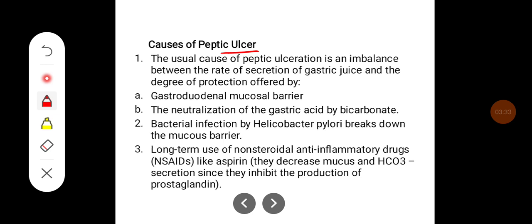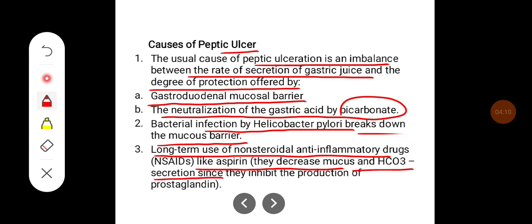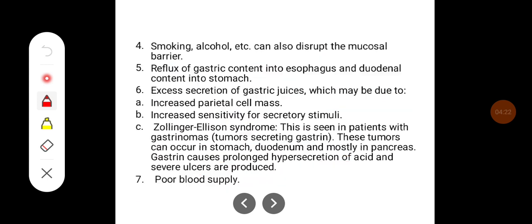Causes of Peptic Ulcer: The usual cause of peptic ulceration is an imbalance between the rate of secretion of gastric juice and the degree of protection offered by the gastroduodenal mucosal barrier and the neutralization of gastric acid by bicarbonates. Bacterial infection such as Helicobacter pylori breaks down the mucosal barrier. Long-term use of non-steroidal anti-inflammatory drugs (NSAIDs) like aspirin decreases mucus and bicarbonate secretion, because they inhibit the production of prostaglandins.